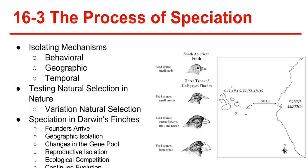16-3: The process of speciation. Speciation refers to changes that lead to the formation of a new species. For speciation to happen, one key element is isolating mechanisms. For a species to evolve into two new species, the gene pools of the two populations must become separated. As new species evolve, populations become reproductively isolated from each other. Reproductive isolation is when members of two populations cannot interbreed and produce fertile offspring. Behavioral isolation occurs when two populations are capable of interbreeding but have differences in courtship rituals — for example, breeding at different times of the year.